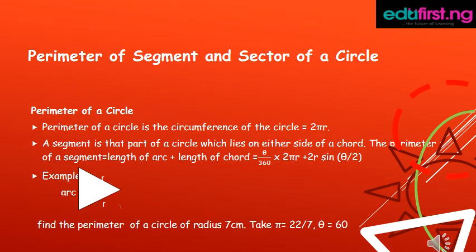Perimeter of a segment and sector of a circle. Perimeter of a circle. Perimeter of a circle is the circumference of the circle which is equal to 2πr.